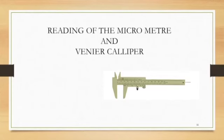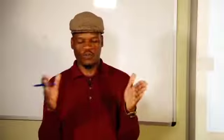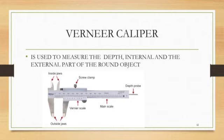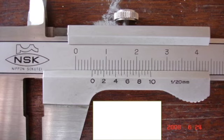We will now look at reading the micrometer and the vernier caliper. These are small precision instruments. The vernier caliper is used to measure the internal diameter and the external diameter, and you must know how to label all its parts. The micrometer is used to measure the thickness of an object, such as the thickness of glass or timber, depending on the material.